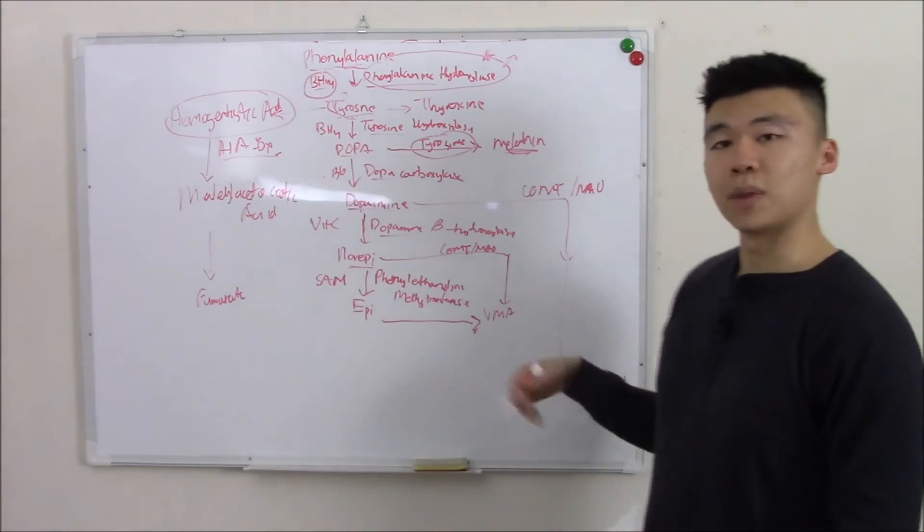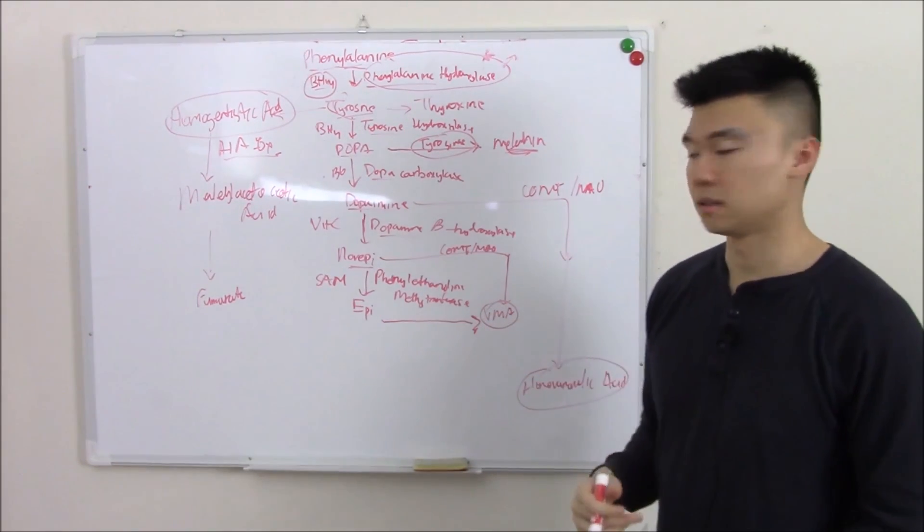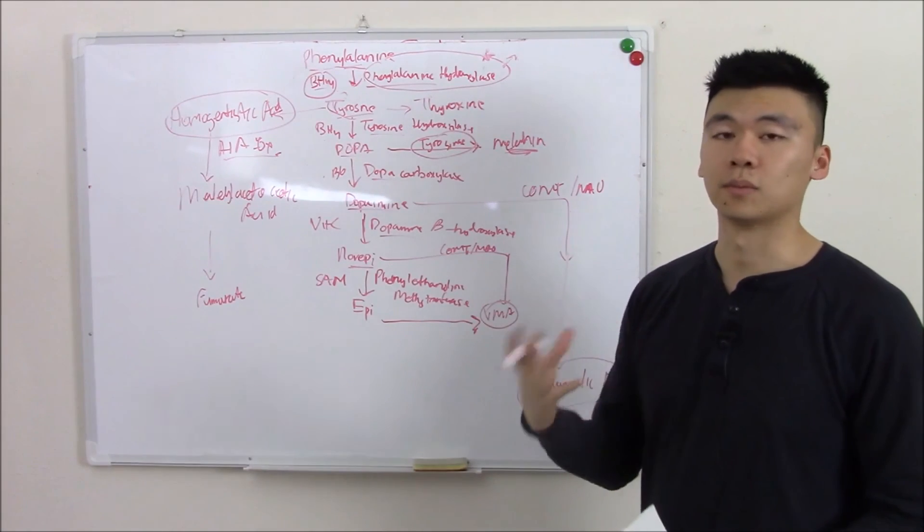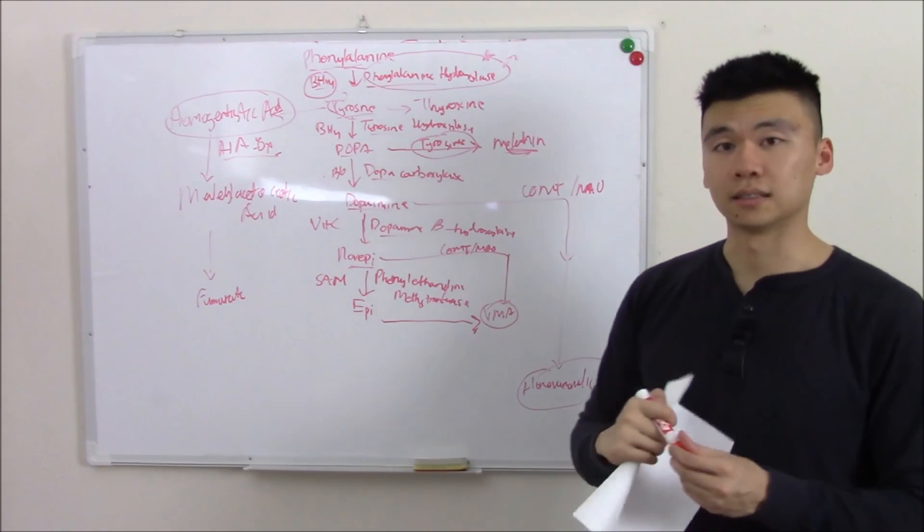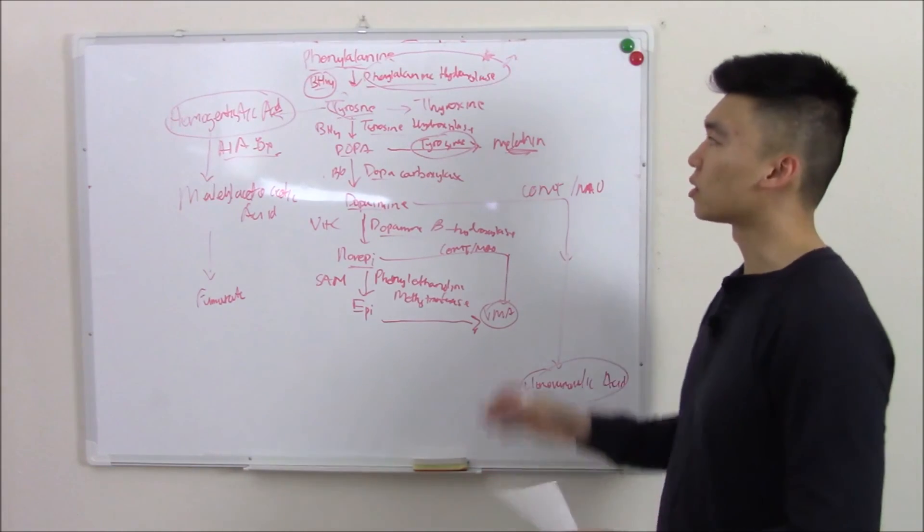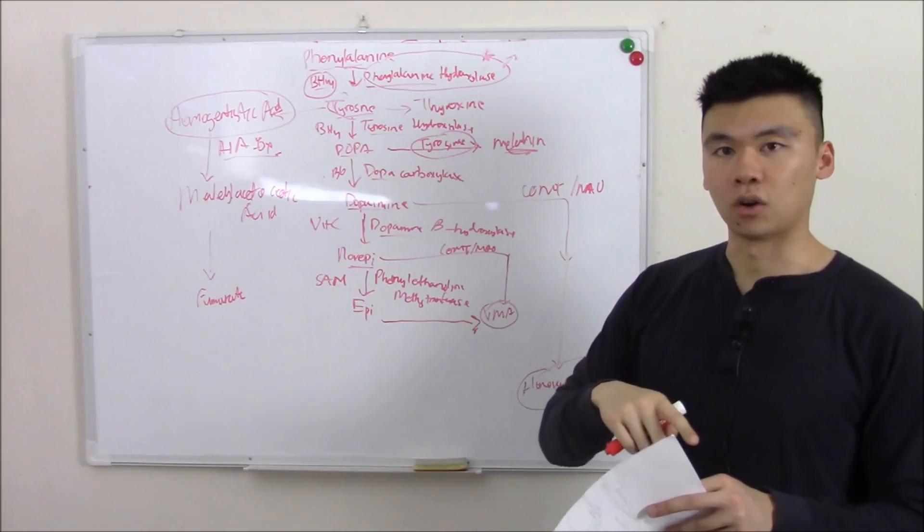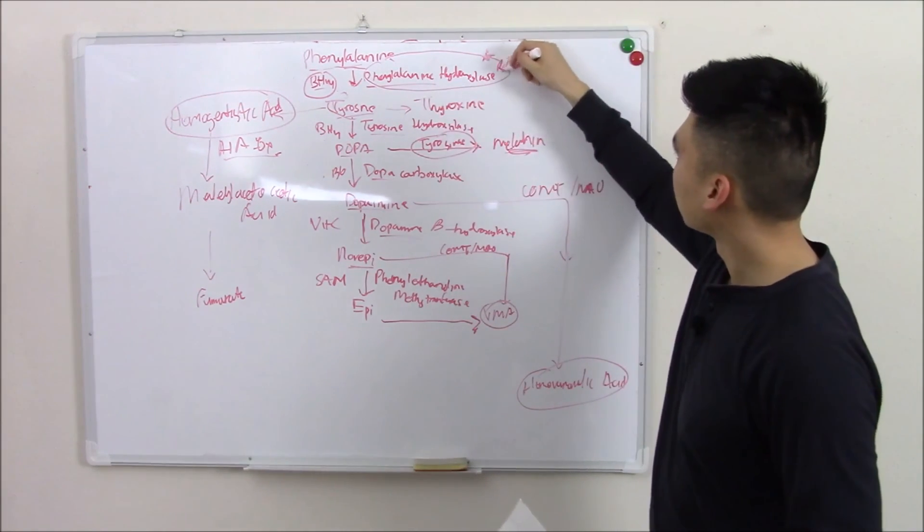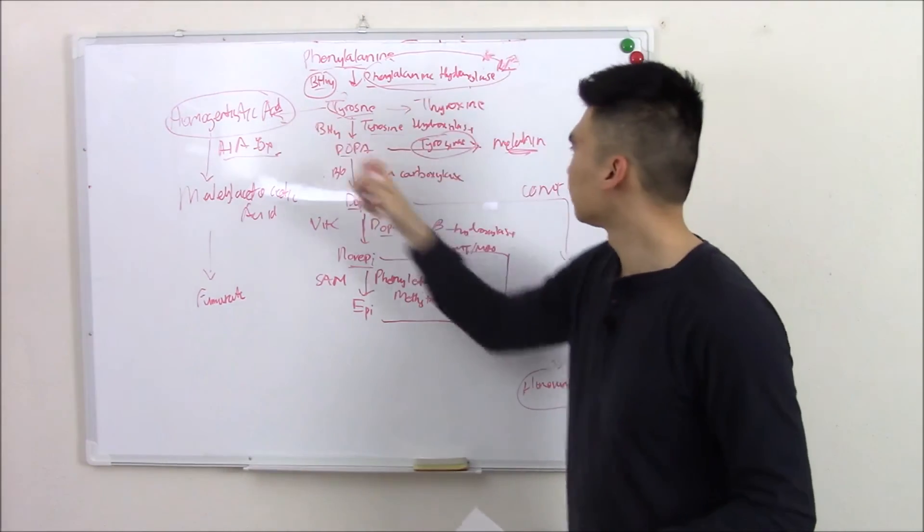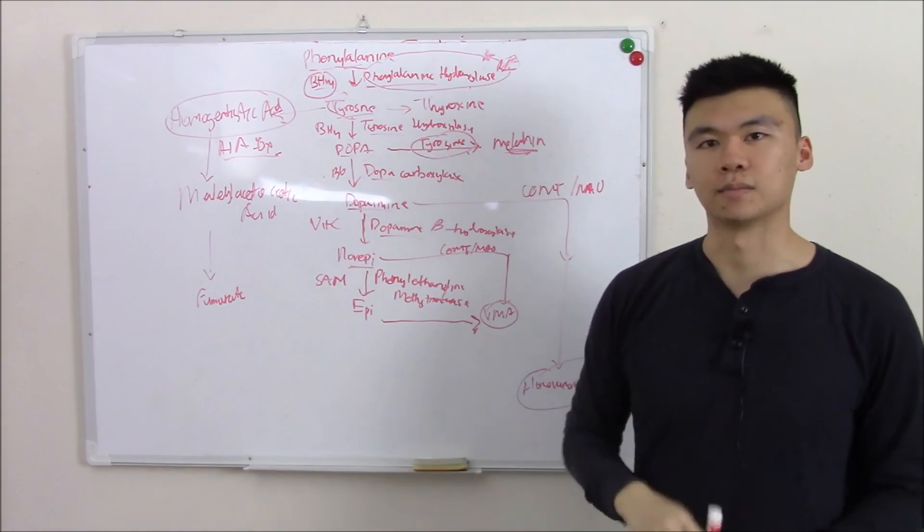And by measuring these metabolites, you can tell whether there's too much catecholamines, either from a tumor, malignant source, etc. That does it for catecholamines. Hope you understood how important amino acids are to making catecholamines. Hope you understand what can go wrong and how to identify them. Till next time. Thanks.